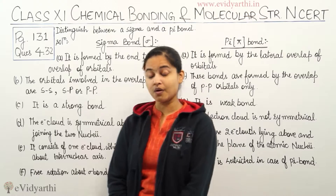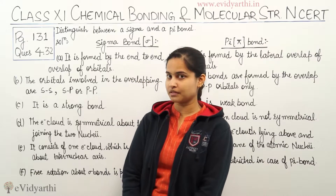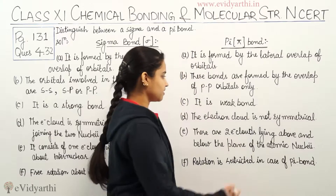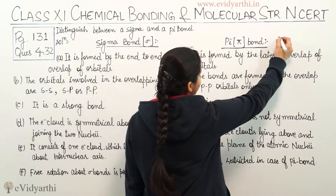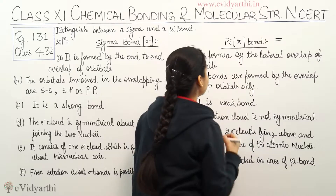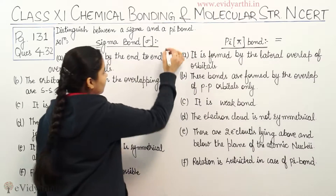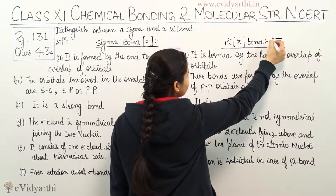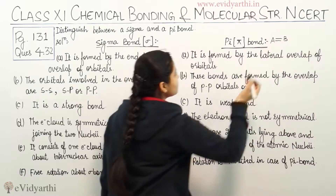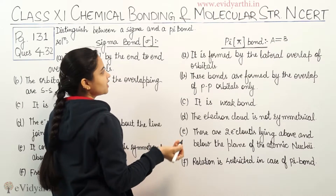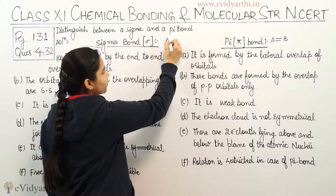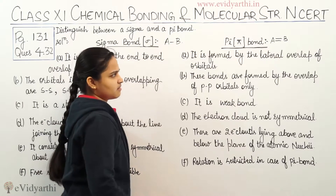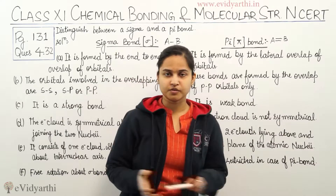You all are well aware about what a sigma bond is and how we represent the pi bond. Pi bond is represented like this — this is known as a pi bond between two atoms. Suppose a double bond between any atoms A and B: this is a pi bond and this is a sigma bond between the two atoms.